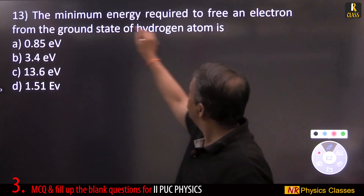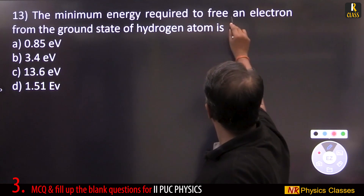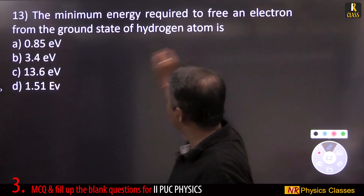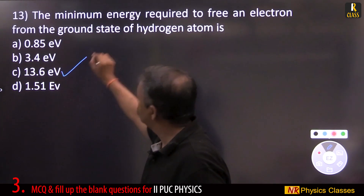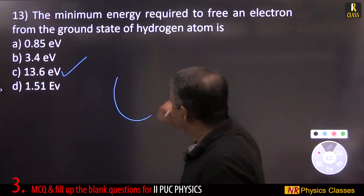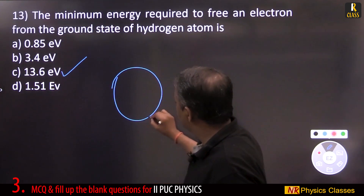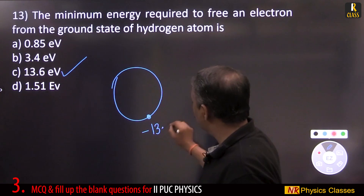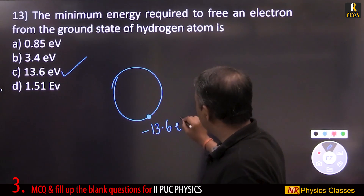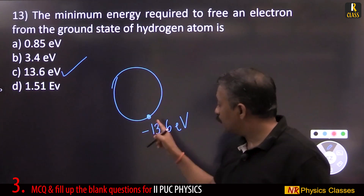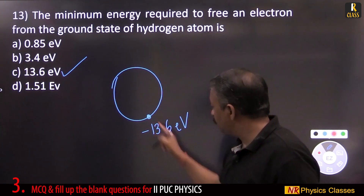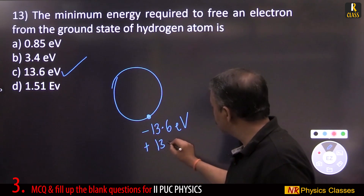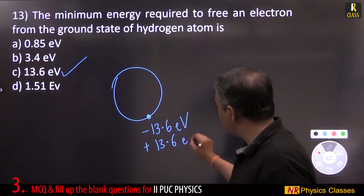The minimum energy required to free an electron from the ground state of a hydrogen atom: in hydrogen, the electron is held with 13.6 eV. So to remove it, we must supply +13.6 eV of energy.